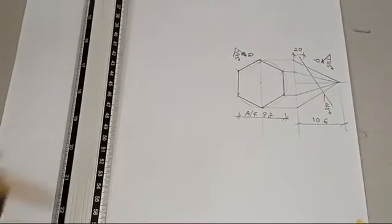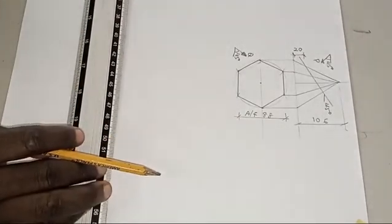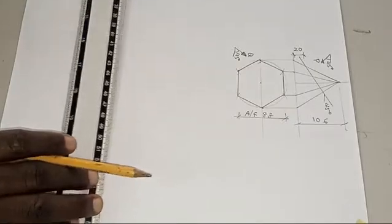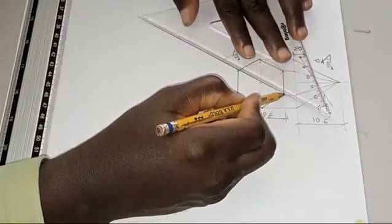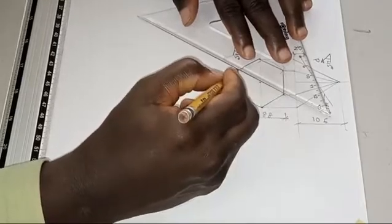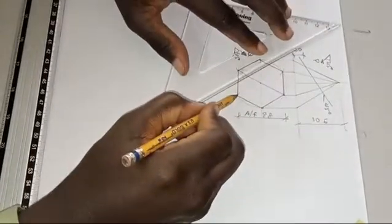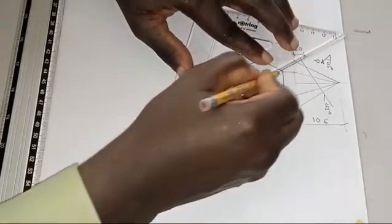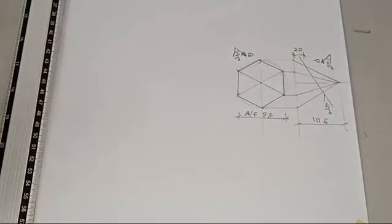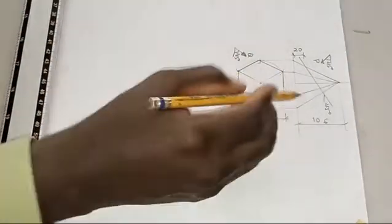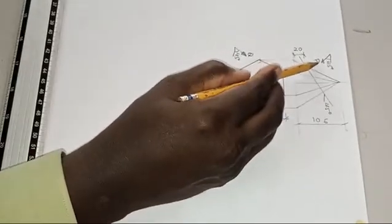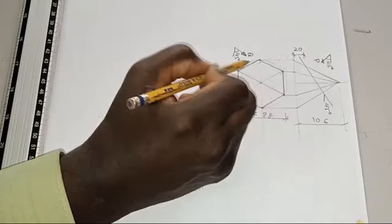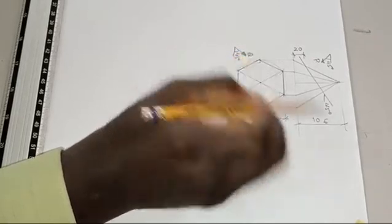Welcome to my channel. Today we will be solving a question on auxiliary projection of a frustum of a pyramid. The pyramid is as shown, and we are to draw an auxiliary plan in the direction of ROP and auxiliary elevation in the direction of ROQ.